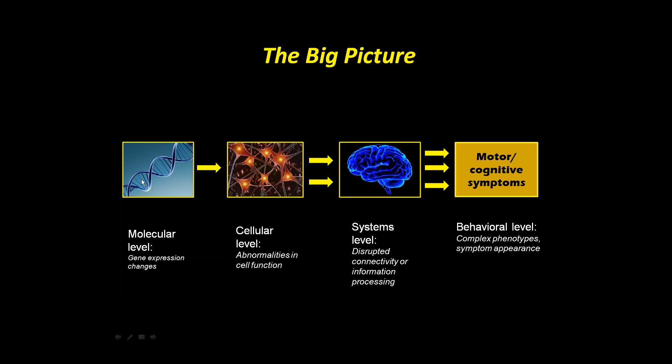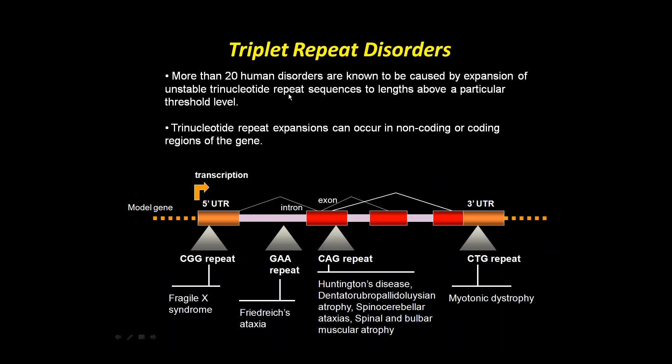Why is this important? At the DNA level, proper regulation of gene expression is critical. A DNA mutation or diseased protein can cause changes in gene expression at the molecular level, which causes cellular abnormalities in neuronal function, which disrupts connectivity and information processing in the brain at the systems level, ultimately leading to motor and cognitive symptoms at the behavioral level. In Huntington's disease, there is a problem at the DNA level with gene expression.